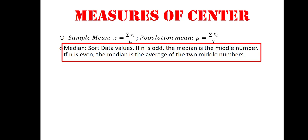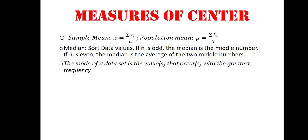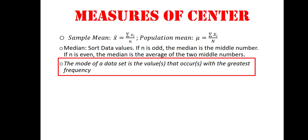If n, the sample size, is odd, the median is the middle number. If n is even, the median is the average of the two numbers that fall at the middle. The mode of our data set is the value